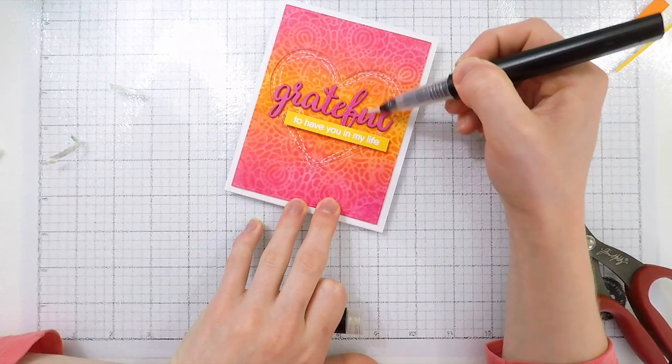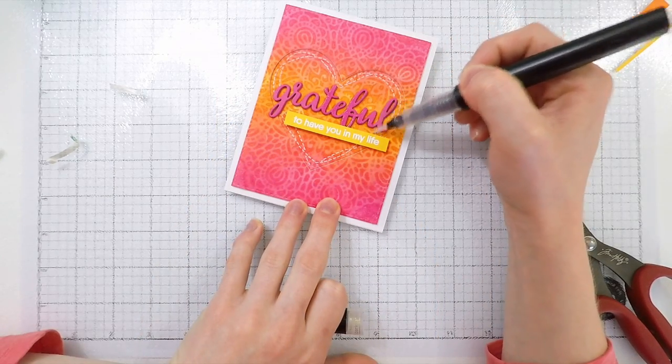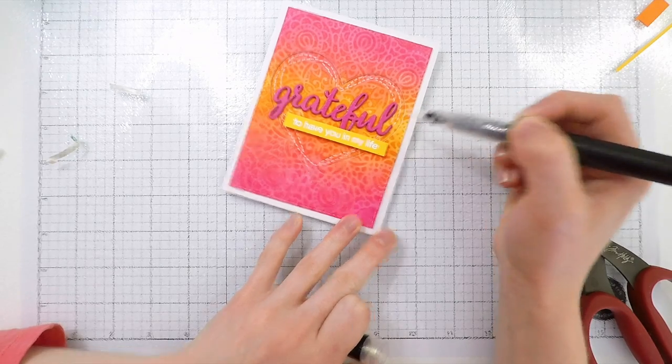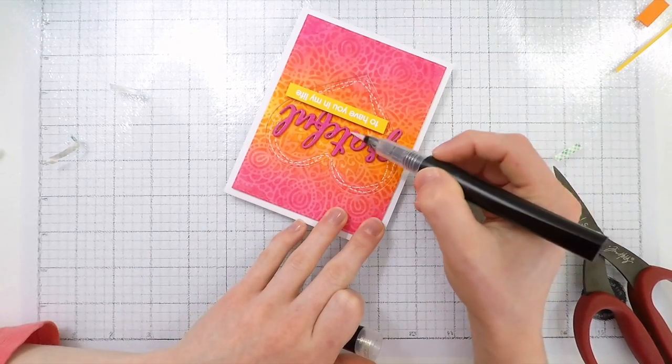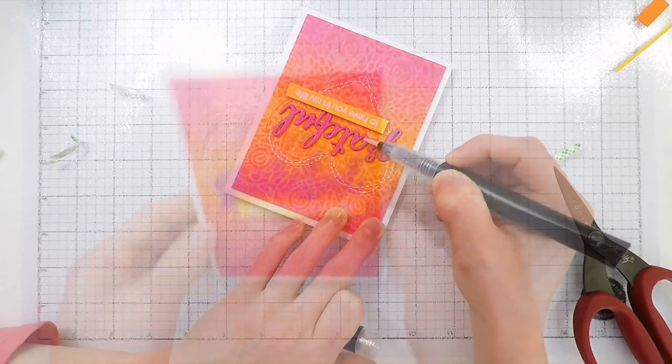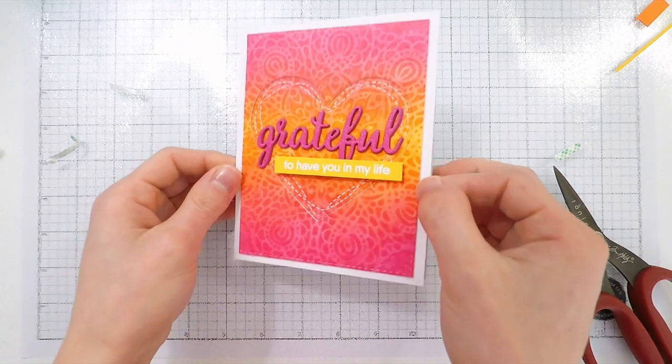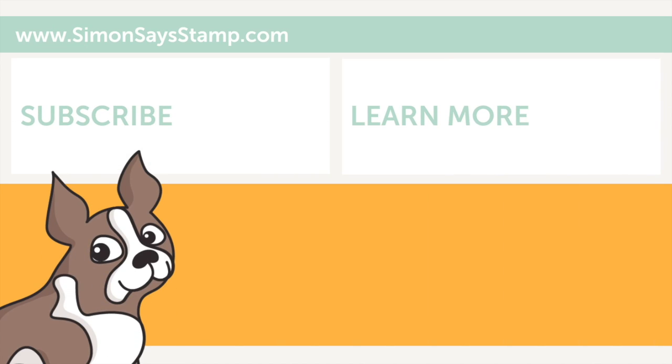To finish up the card, I added some Spectrum Noir clear sparkle over top of the word grateful and that's going to finish up this card. Really quick and easy to do and creates really stunning effects to have that stamped impression from the stencil on your backgrounds. I hope today's video has inspired you to do some stencil impressions of your own.